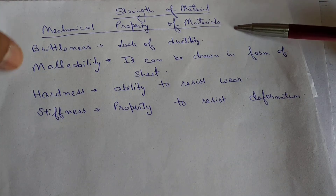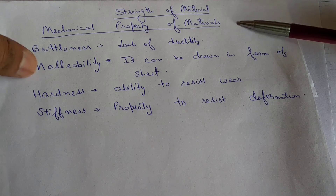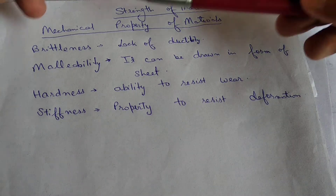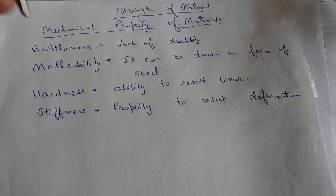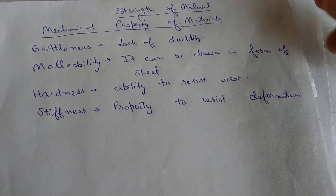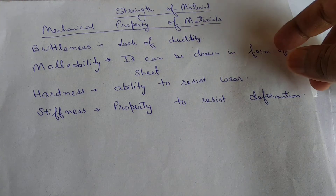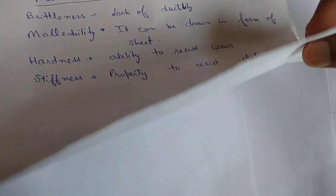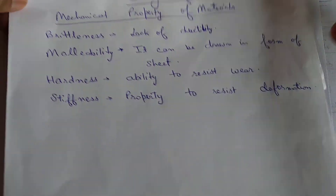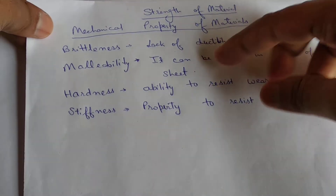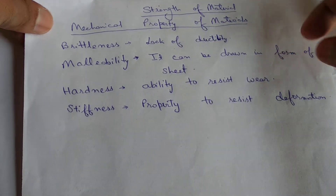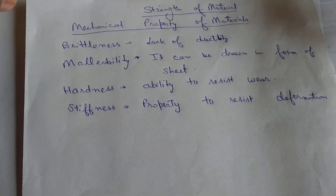Next, what is malleability? By this property, the object can be drawn into the form of a sheet. This is the sheet of a paper. So the metal can be drawn into the form of a sheet.